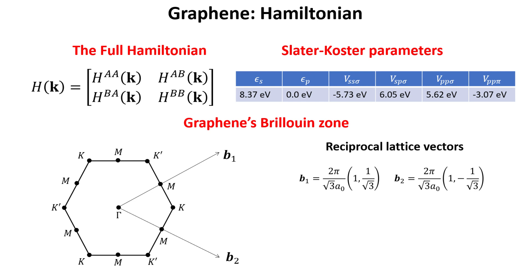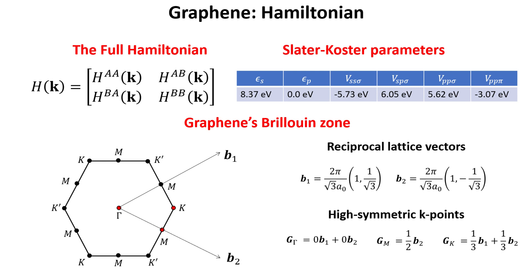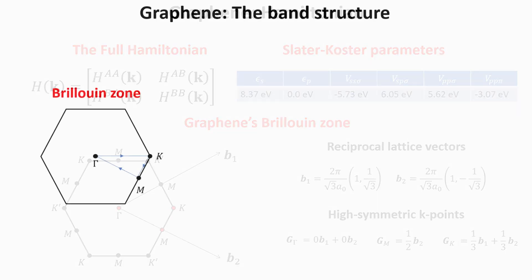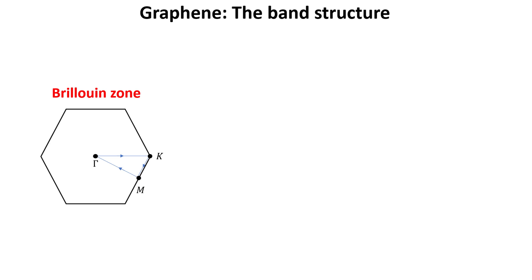It is customary to define a specific set of momentum values and plot the band structure along them. Here we show graphene's Brillouin zone as well as the reciprocal lattice vectors b1 and b2, which are explicitly written here. In plotting the band structure, we first specify a few highly symmetric momentum points in the Brillouin zone. For graphene, these points are Gamma — the center of the Brillouin zone — K and K prime, which are two inequivalent corners of the hexagonal Brillouin zone, and the M points at the boundary of the Brillouin zone at the midpoint between neighboring K and K prime points. We select a path in momentum space connecting these high-symmetry points, beginning at the Gamma point and returning to the Gamma point after passing through K and M.